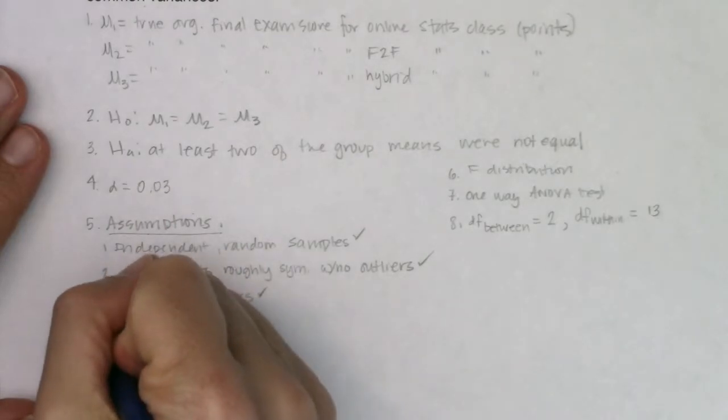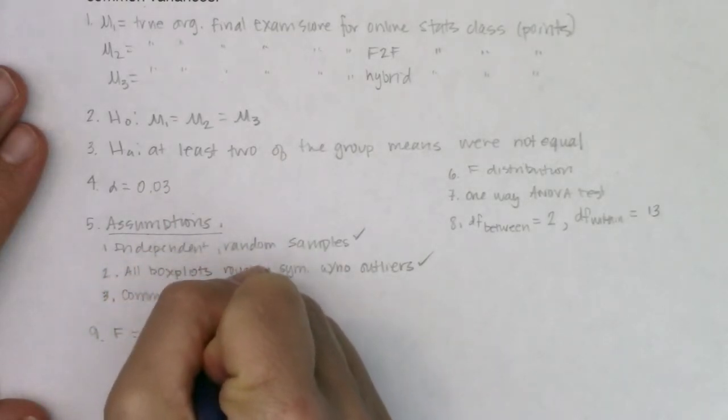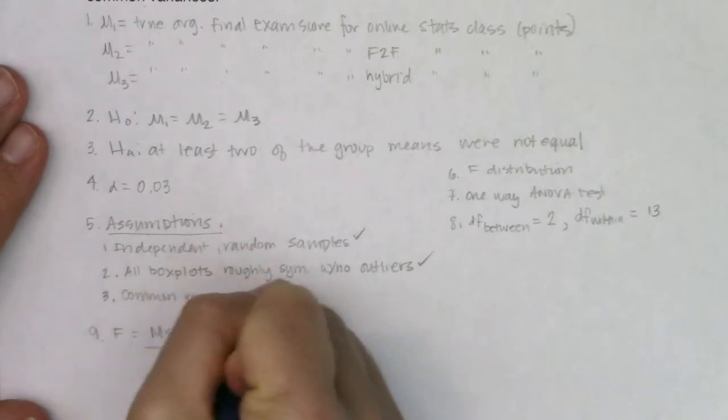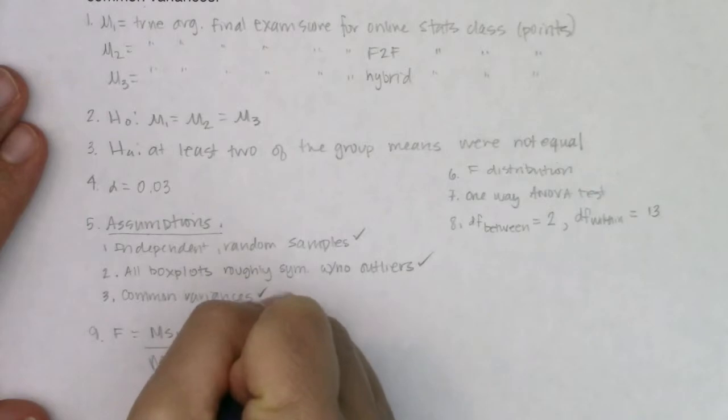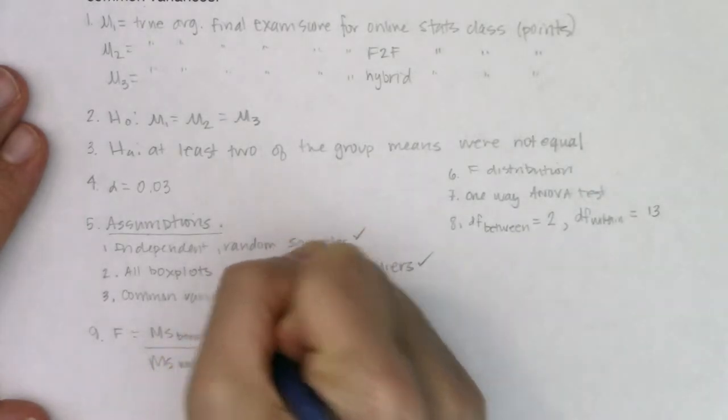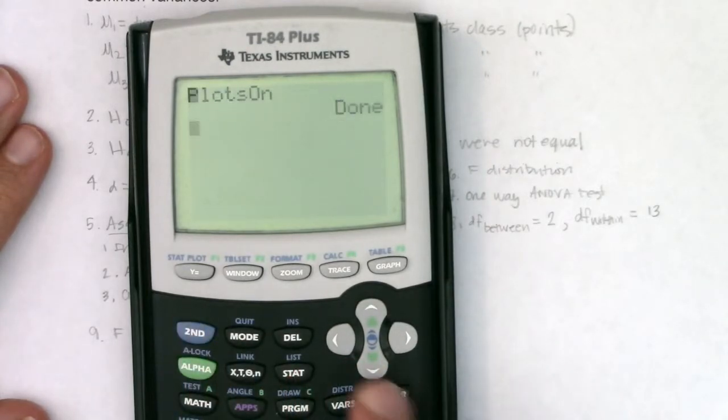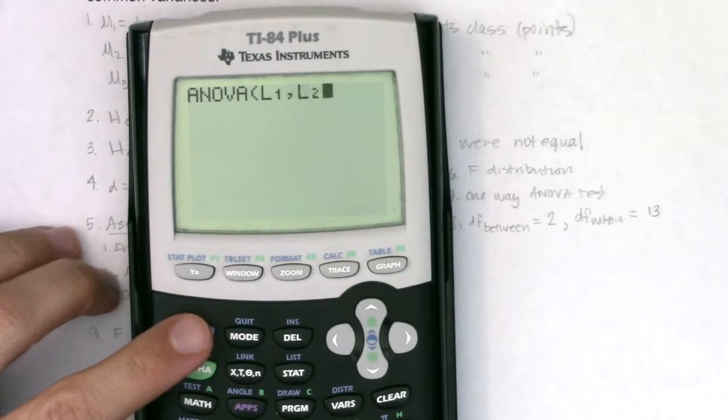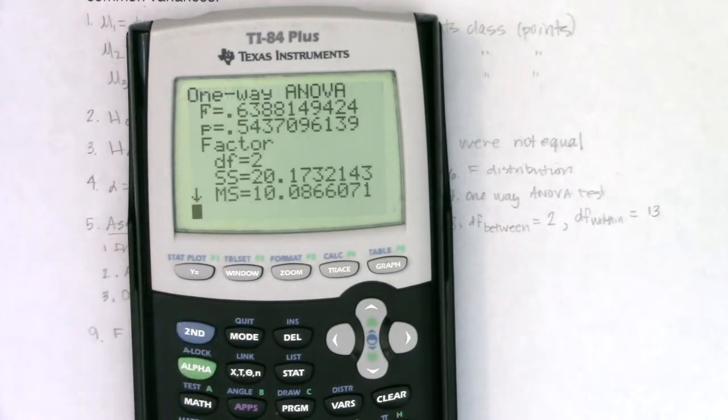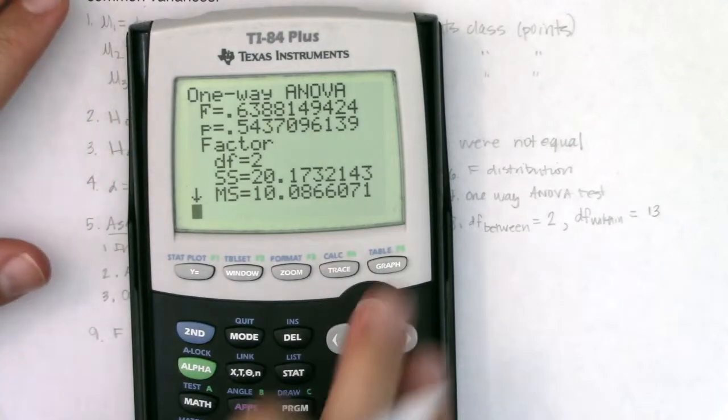So for step nine, we know our F test statistic is always the mean squares between in ratio to the mean squares within. And let's see what we're getting from our calculator. I had three data sets, so here we go. We're going to do stat test, go to ANOVA, L1, L2, L3.